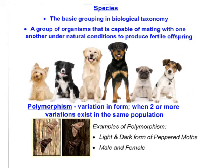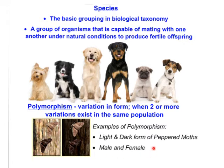Now, these organisms are all part of the same species, yet they look very, very different from one another. And that is called polymorphism — poly meaning more than one, and morphism meaning form or variation in form. When two or more variations exist in the same population, we call those polymorphisms. Here's another example: we have the light peppered moth and the dark peppered moth — they are different forms of the same species of that population. Other examples of polymorphisms are male and female; they are different forms within the same population.